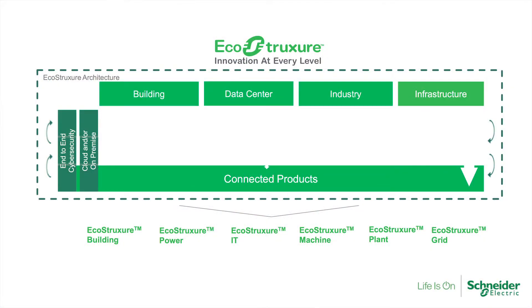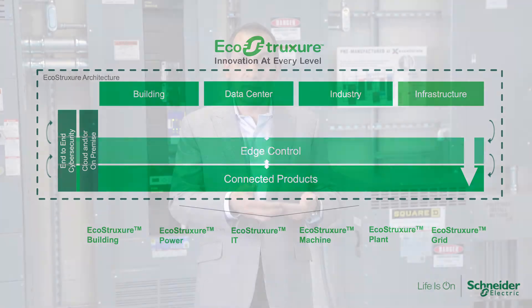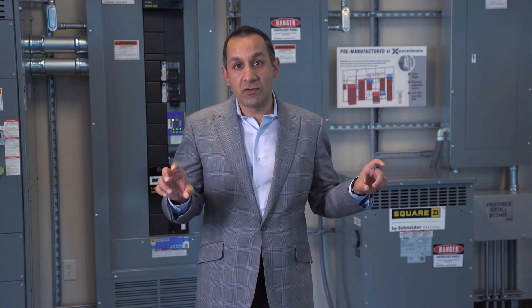The next layer creates a layer of edge control, and this is really just giving the facilities operations team visibility of how their equipment is performing. It's behind the firewall, it's secure, and it automates a lot of the tasks that we were doing manually. This edge control layer comes with its own software stack, depending on whether you're in EcoStruxure Power, EcoStruxure Building, or EcoStruxure for Industry.